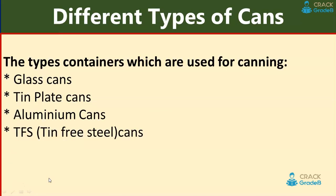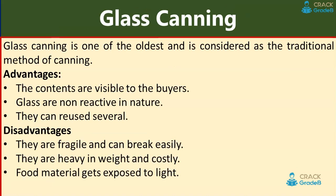Different types of cans: cans are made up of different materials, including glass cans, tin plate cans, aluminium cans, and tin-free steel cans. Glass canning is one of the oldest and is considered the traditional method of canning.